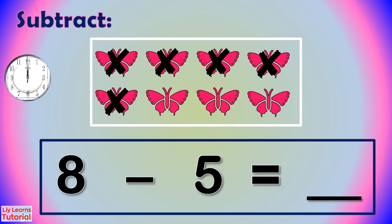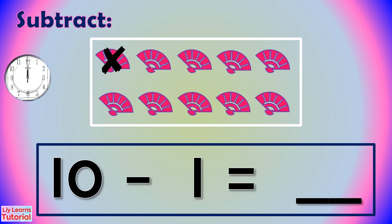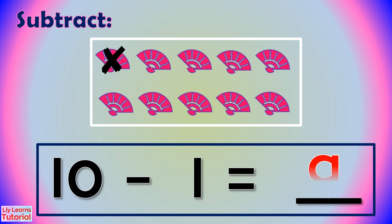Let's subtract: 8 minus 5 equals 3. 10 minus 1 equals 9.